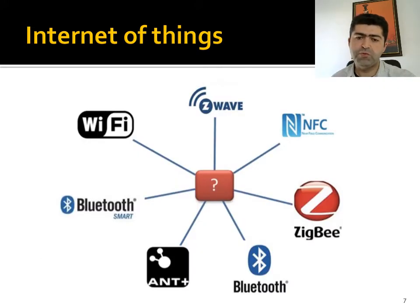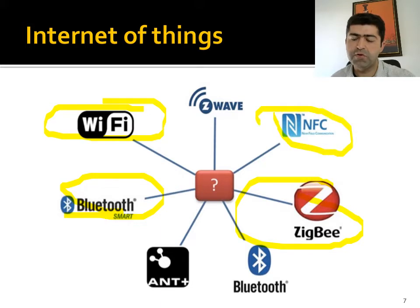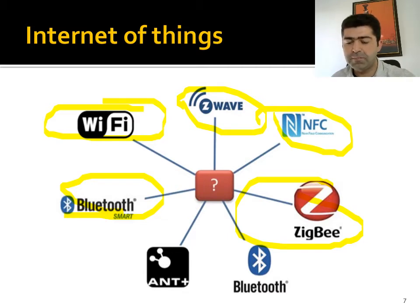Different protocols are used for communication through sensor networks. Wi-Fi protocols, Bluetooth protocols, ZigBee protocols, near-field communication protocols, and Z-Wave protocols used in domotics and home automation systems can be exemplified for these protocols.